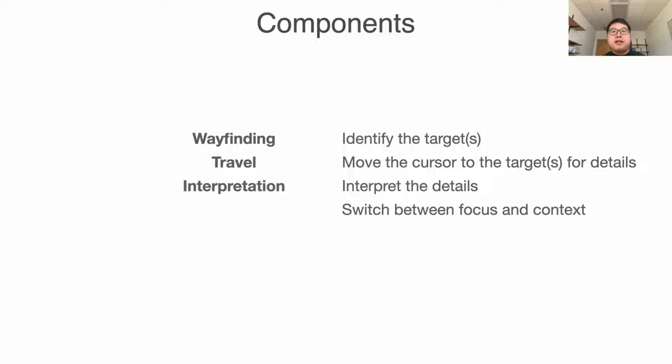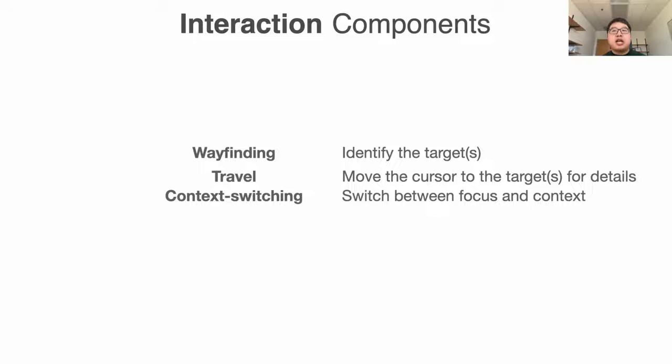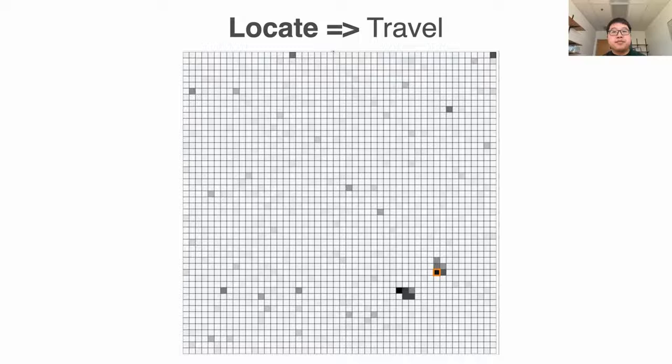We focused on the three interaction components in this study: wayfinding, travel, and context switching. To systematically explore those components, we designed three fundamental tasks. Locate, where participants need to click on a specific cell highlighted with the orange outline. This tests the travel component.